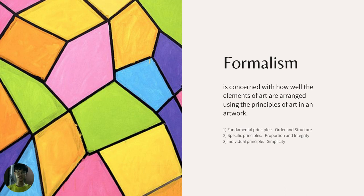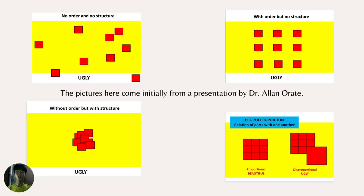The third is my topic: formalism, which is concerned with how well the elements of art are arranged using the principles of art. Like the concept of the three theories of aesthetic, there are also three major principles working in judging the form of an artwork. I'd like to acknowledge that I got these pictures from the presentation of Dr. Alan Po that Sir Nelson uploaded on the lecture files.